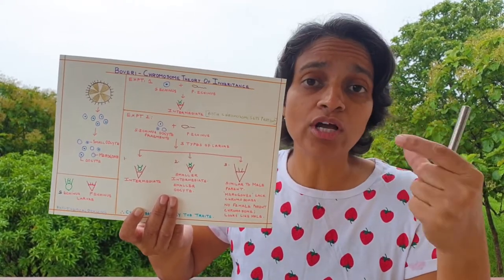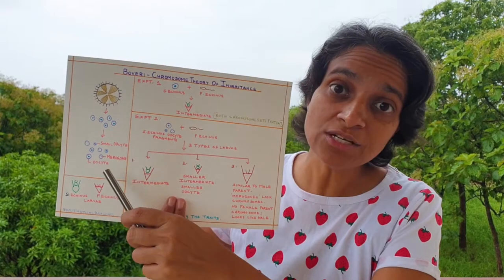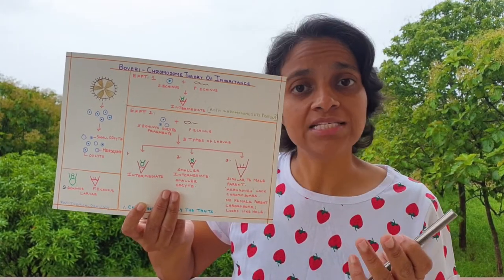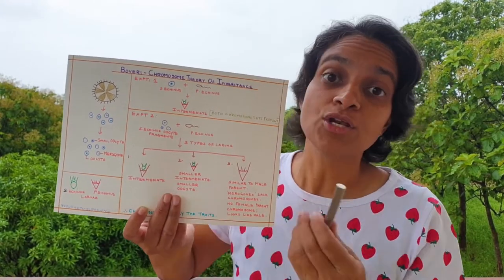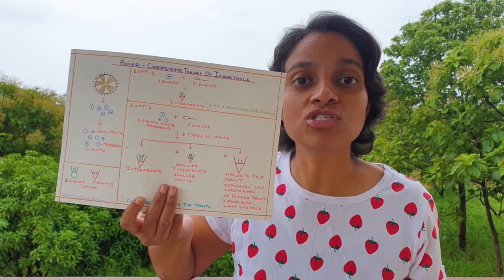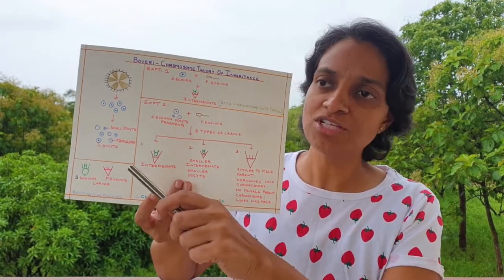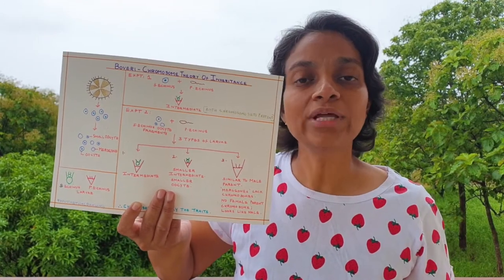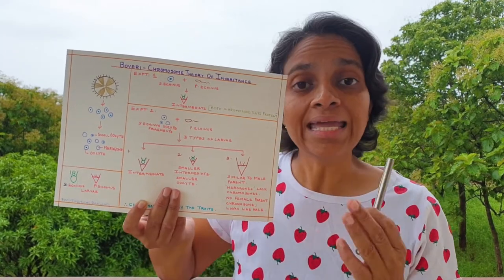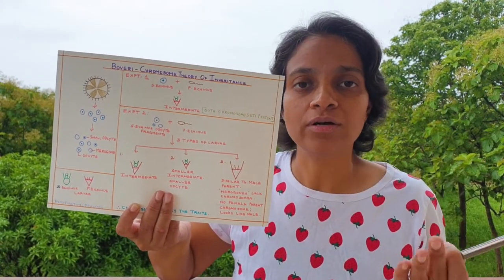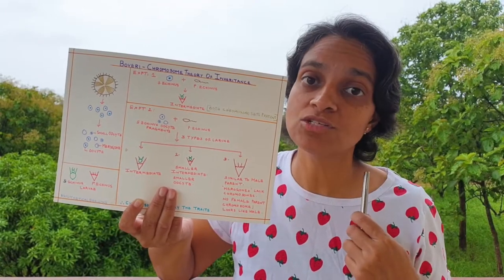Boveri shook a container full of oocytes and he got fragmented oocytes. Some were normal in size, some oocytes were smaller in size, and some fragments did not have any nucleus of the oocytes. When he saw these fragments without the nucleus, which he called merogons, he came up with the idea that using these merogons he could prove the role of chromosomes in passing on characters from parents to offspring.